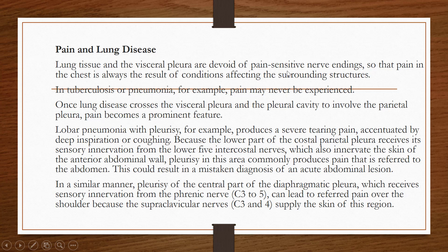Pain will be present if there is involvement of the parietal pleura, not the visceral pleura. Lobar pneumonia with pleurisy — pleurisy being the inflammation of pleural membranes — will produce a severe tearing pain, accentuated by deep inspiration or coughing, because the parietal pleura is involved.